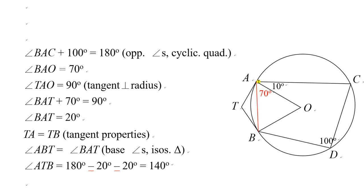Angle BAC plus 100 degrees would be 180 degrees because opposite angles cyclic quadrilateral. So angle BAO would be 80 degrees minus 10 degrees, so that is 70 degrees.